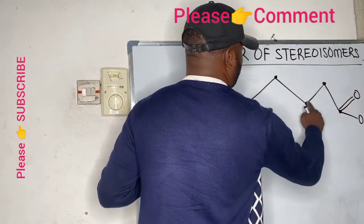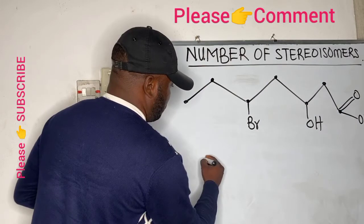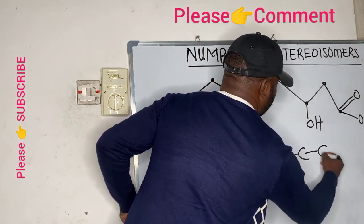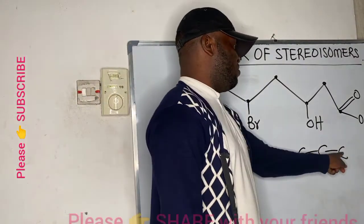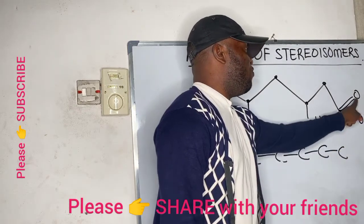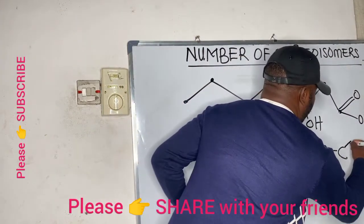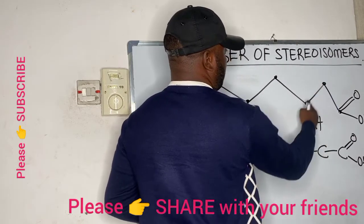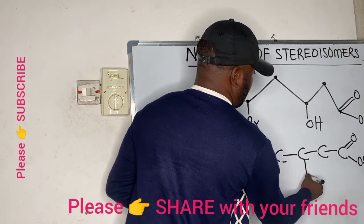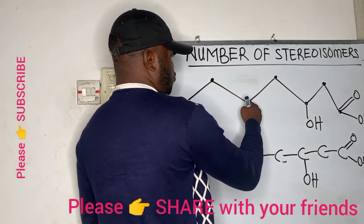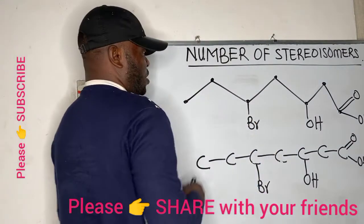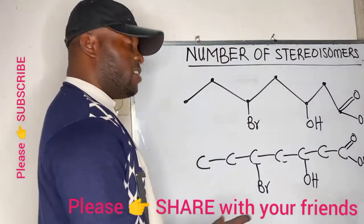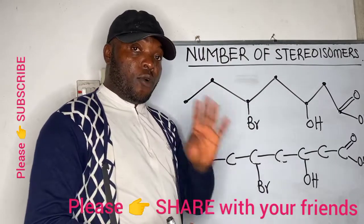Let us draw the structure in the normal method by showing the carbon atoms and hydrogen atoms present. We have 1, 2, 3, 4, 5, 6, 7 carbon atoms. Starting from carbon 1, we have COOH — that is carboxylic acid. Carbon 2 has nothing. Carbon 3 has OH. Carbon 4 has nothing. Carbon 5 has bromine. Now all I need to do is to complete the bonds. Remember that in organic chemistry, every carbon atom must be surrounded by a total of 4 bonds.